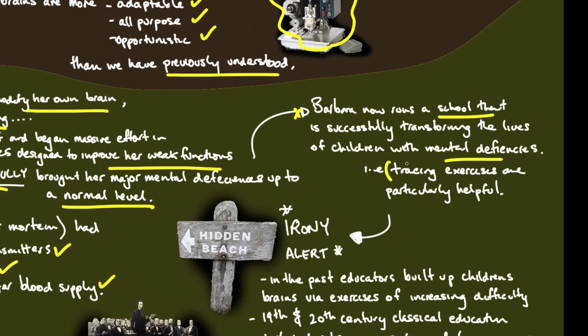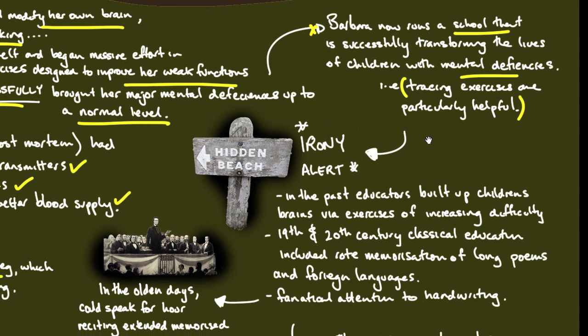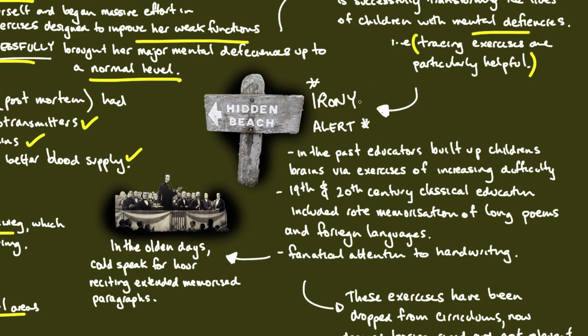Barbara now runs a school successfully transforming the lives of children with mental deficiencies. The exercises they engage in can be quite monotonous but build from simple to more complex. Things like tracing exercises are particularly helpful.